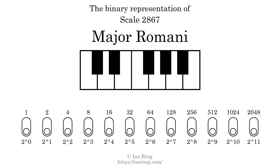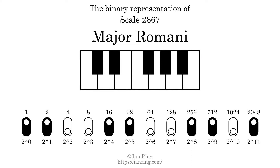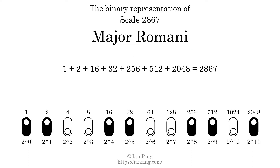The binary representation of this scale is determined by mapping tones of the scale to binary digits. Each binary digit represents a power of 2. To get the scale number, we add the powers of 2 together. The powers of 2 that are present in the scale, all added together, equals 2867.